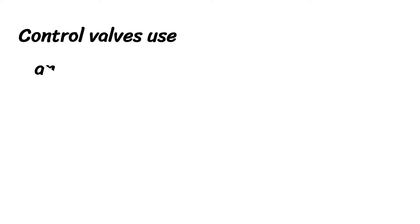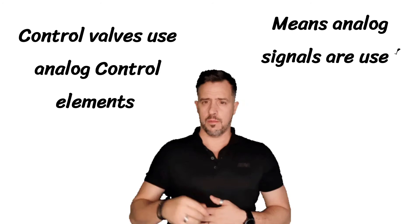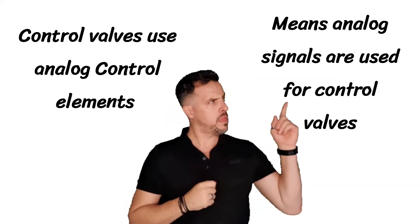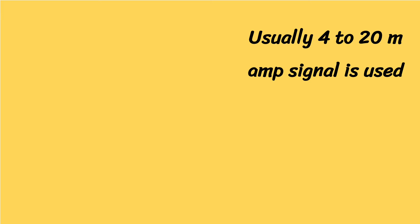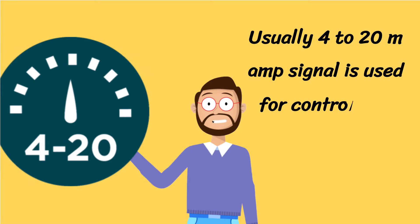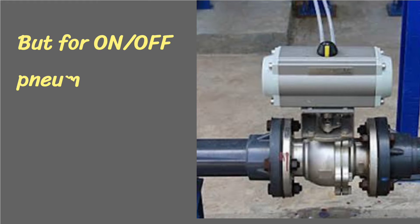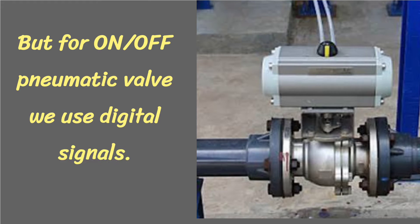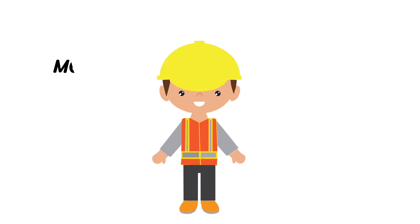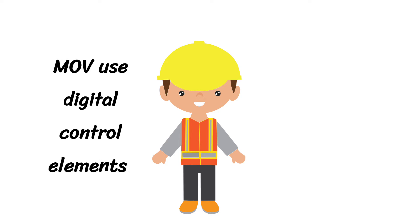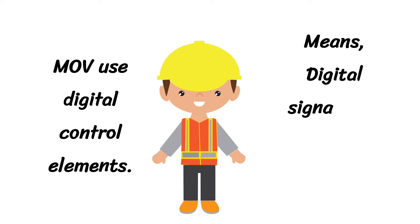Control valves use analog control elements — meaning analog signals are used for control valves. Usually a 4 to 20 mA signal is used for control valve operation. But for on/off pneumatic valves, we use digital signals. MOV uses digital control elements — meaning digital signals are used for MOV.